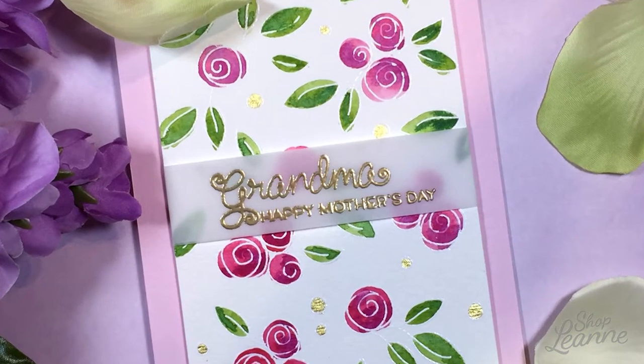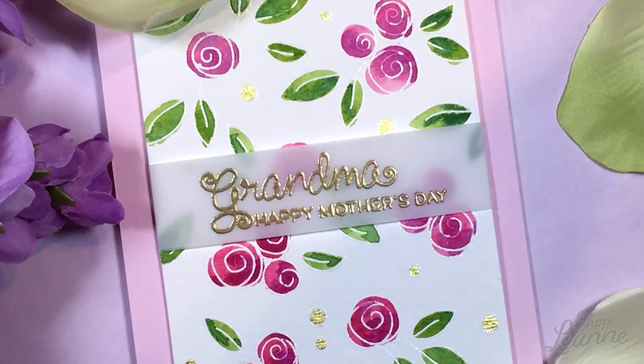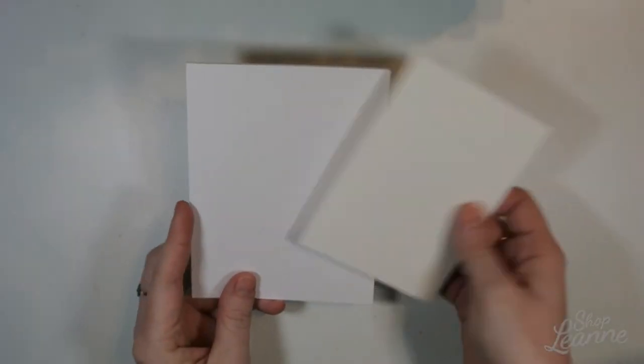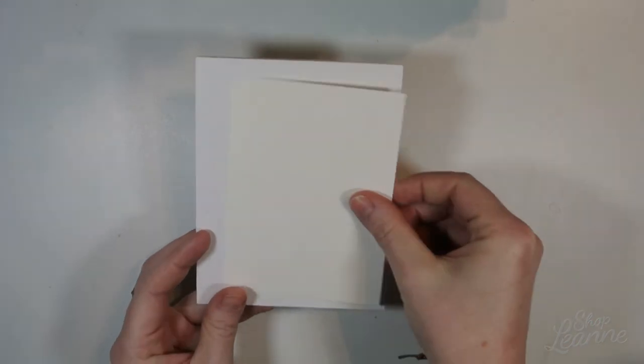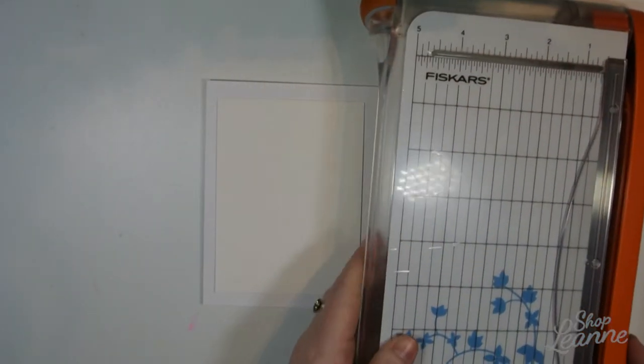I'm using the Roses for You stamp set from Simon Says Stamp to do this with some watercoloring. So to begin I have a card base, an A2 size folded card, and then a piece of watercolor cardstock cut down a little bit off the height and width.